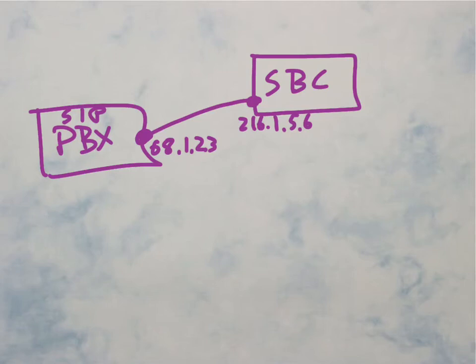And of course, the PBX itself has its own public IP address. Why is a public IP address important? Because NAT is not very friendly to SIP.